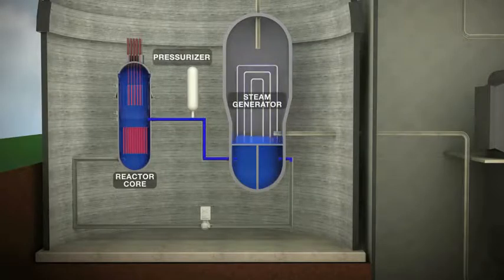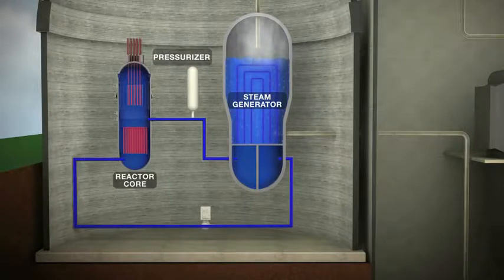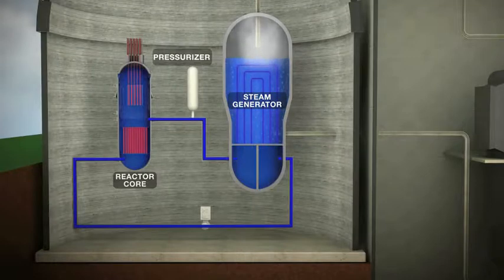The hot water is piped from the reactor vessel to a steam generator, where it transfers its heat to boil water and makes steam in a second system.